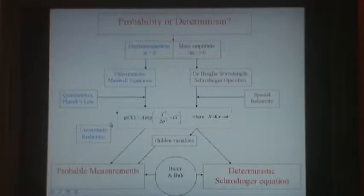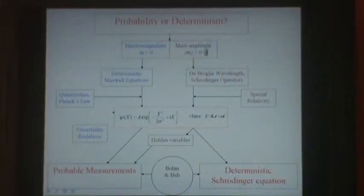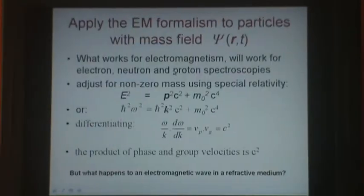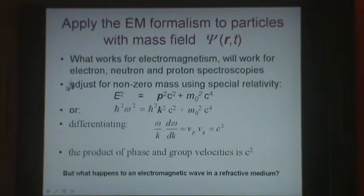Now we're going to take this travelling wave group and apply it to massive particles. To do so, we're going to have to introduce special relativity. Here it is. What works for electromagnetism will work for electron, neutron and proton spectroscopies.